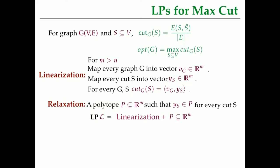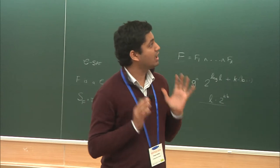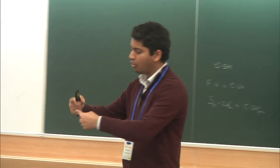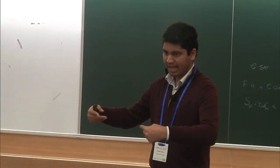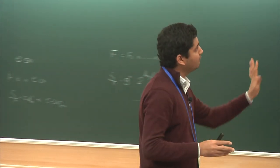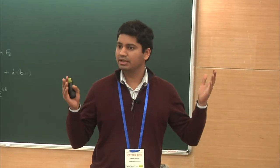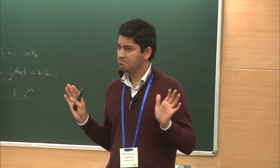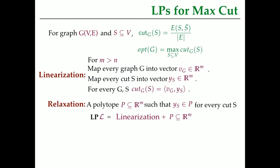The next step was to add any valid set of inequality constraints — I call this the relaxation step. At this point, I allow you to choose any polytope which contains all the Y_S's corresponding to all possible S's. Any polytope that contains all the cut vectors, written in inequality constraint form, is a valid set of inequalities. I can take any of these. That's what my arbitrary LP for max cut looks like.